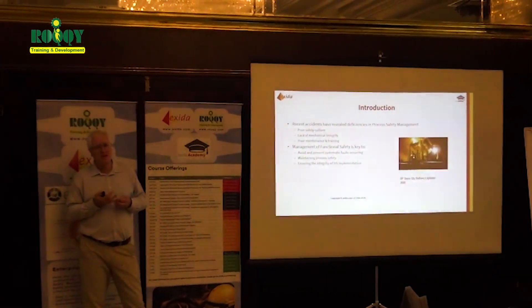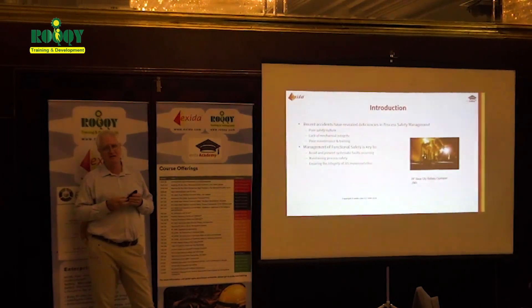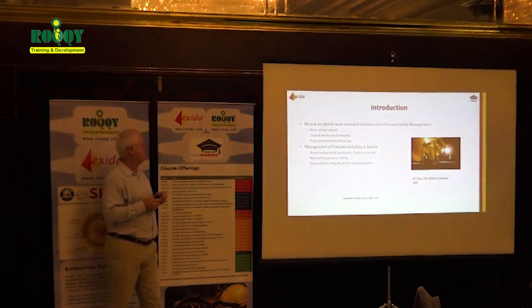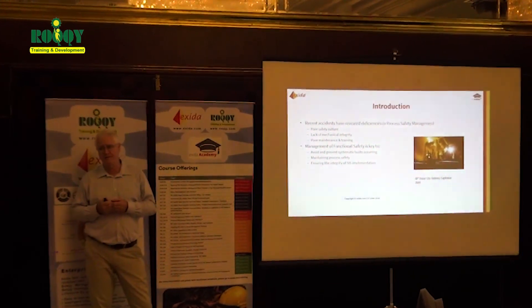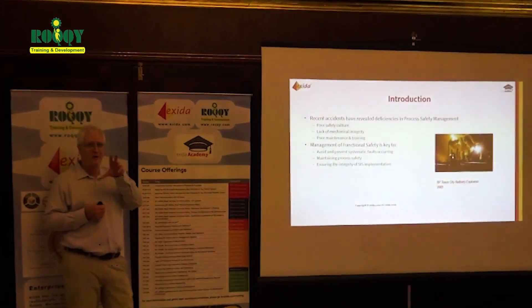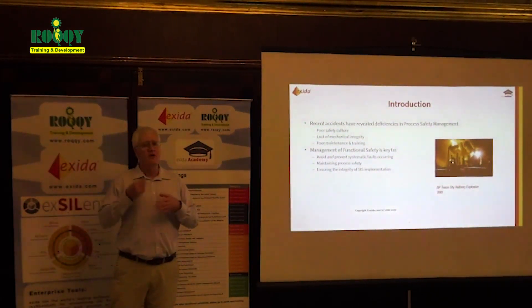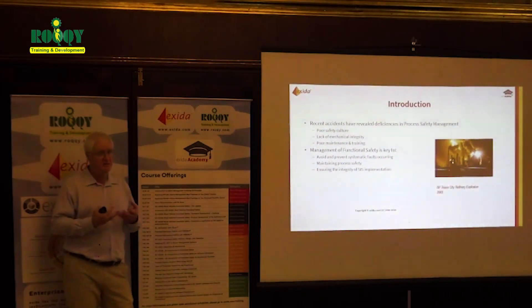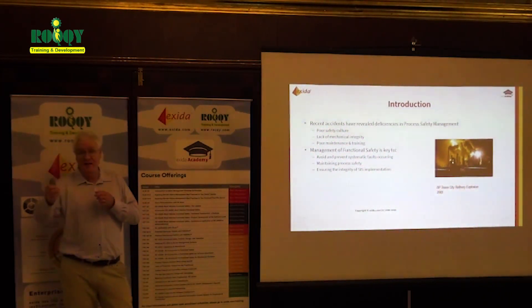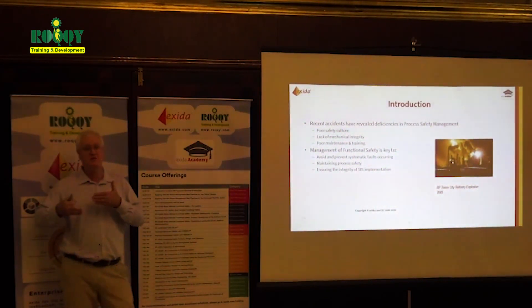The management of functional safety — which is the key anchor for the functional safety standards — was introduced to avoid and prevent systematic faults from occurring. We want to maintain process safety, track incidents, track those leading indicators, and act on lagging indicators to reduce accident rates on our facilities.